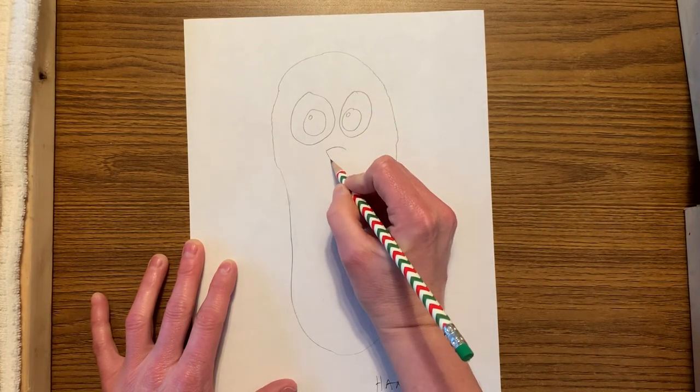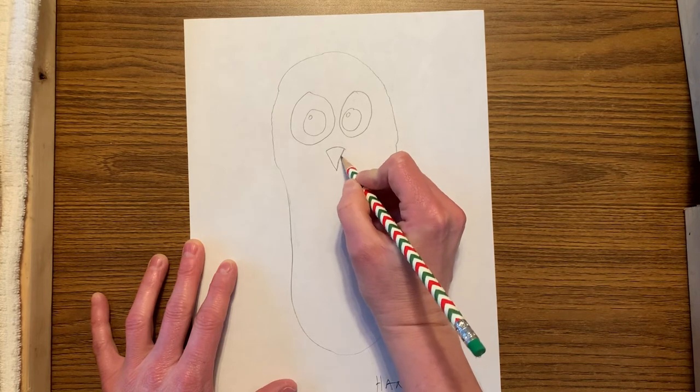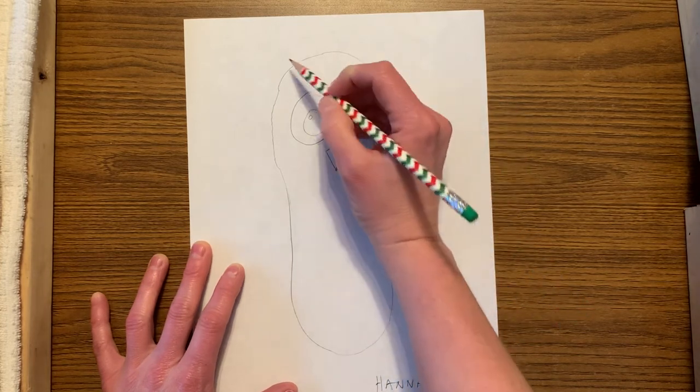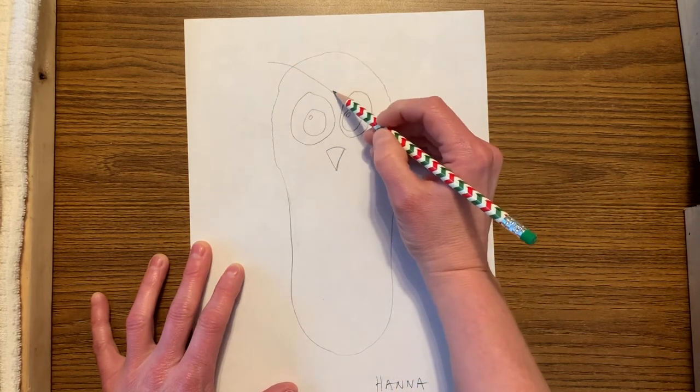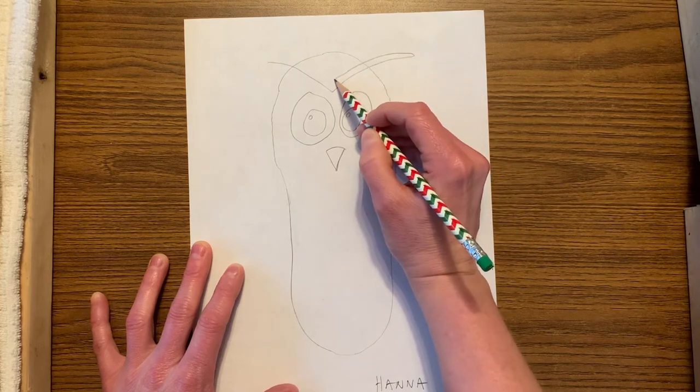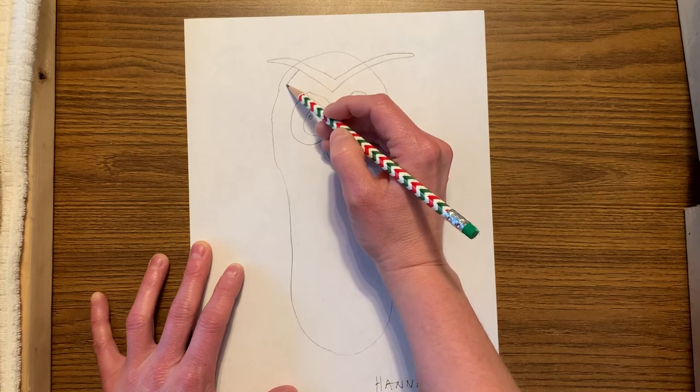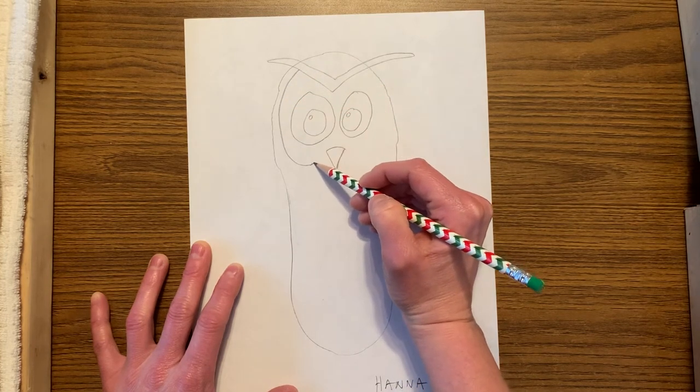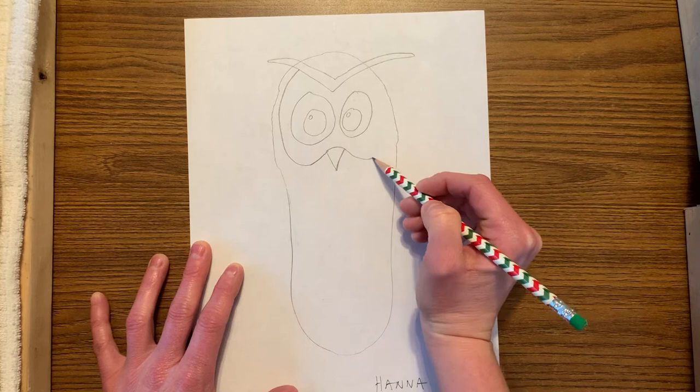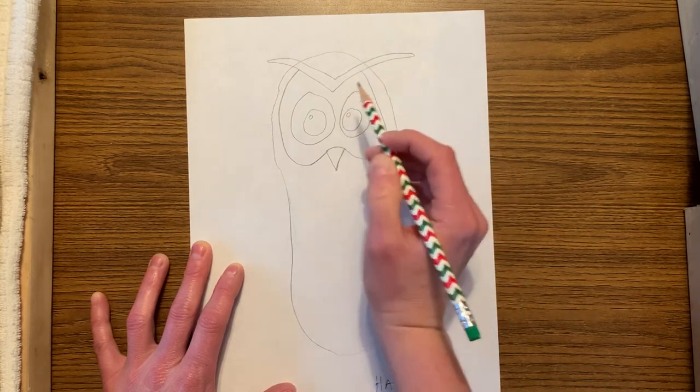And then we need a beak. We can't forget the owl's beak, and then I like the eyebrows of the owl, the wise old owl, and then they have like a little, I always call it like a face mask, but I'm not too sure what it is, but it's like the plumage that's kind of on their face a little bit there.